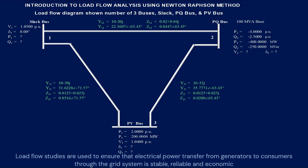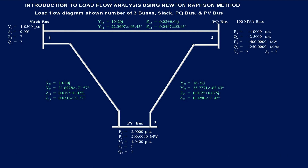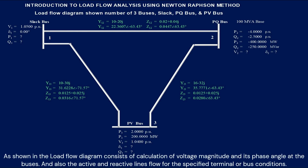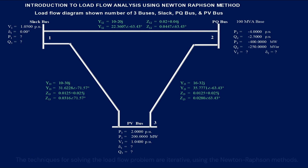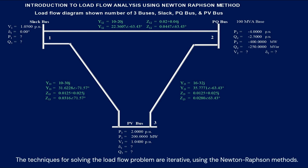Load flow studies are used to ensure that electrical power transfer from generators to consumers through the grid system is stable, reliable, and economic. As shown in the load flow diagram, it consists of calculation of voltage magnitude and its phase angle at the buses, and also the active and reactive power line flows for the specified terminal or bus conditions. The technique for solving the load flow problems is iterative using the Newton-Raphson method.